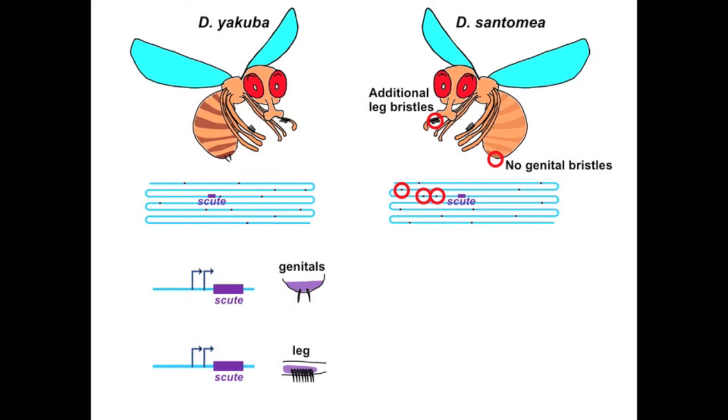We tested the effect of our candidate mutations in Drosophila melanogaster, and we found one particular mutation that's very interesting. This mutation changes a single letter in the DNA. It causes the gene SCUT to be expressed at a lower level in Drosophila santomea compared to Drosophila yakuba, and thus no genital bristles are formed.